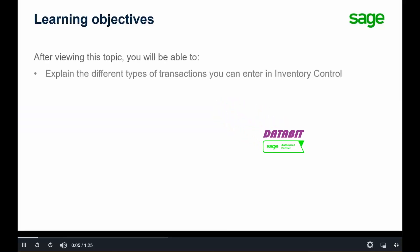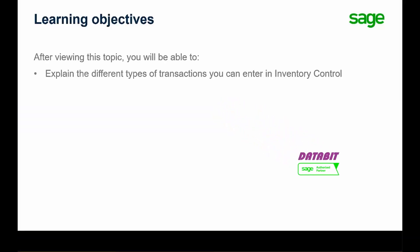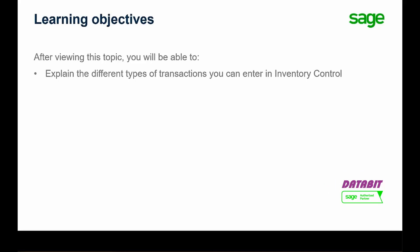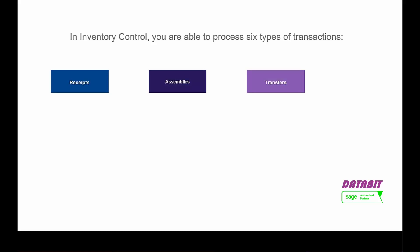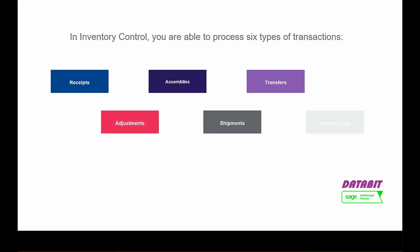Over the next few minutes, we will explain the different types of transactions you can enter in Inventory Control. In Inventory Control, you are able to process six types of transactions. Those transactions include receipts, assemblies, transfers, adjustments, shipments, and internal usage.